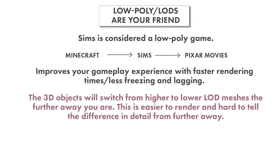The different LODs play a crucial role in this process. As you change your viewpoint in Sims, the amount of objects that need to render changes. As you zoom out, more objects are on screen, which means more work for your computer. To help with this, the 3D objects will swap out higher LOD meshes for lower LOD meshes as you move further away. The addition of new objects is balanced by the lower LOD meshes, which have lower poly counts. This makes it easier on your computer to render everything, and since you're farther away, it's hard to tell the difference in detail between the higher and lower LOD meshes.